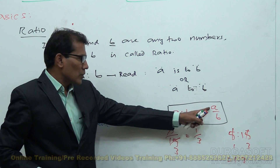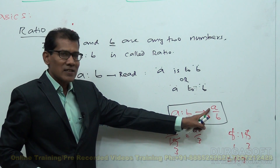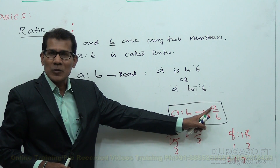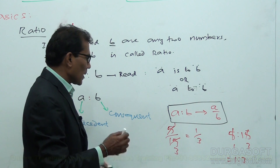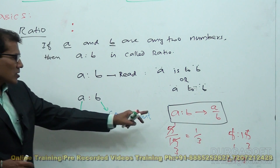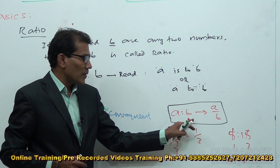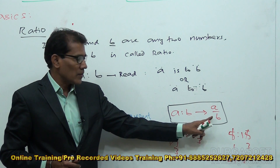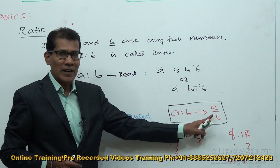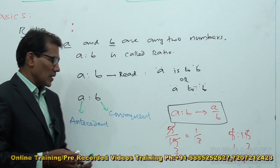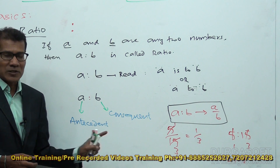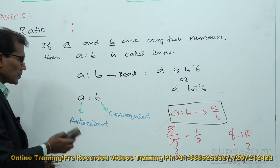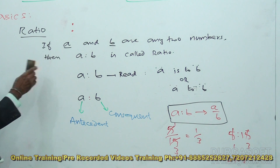When we write A by B, we do not call the parts antecedent and consequent. When we write A by B, A is called the numerator and B is called the denominator. The same thing A is to B — A is called antecedent, B is called consequent. But when expressed as a fraction A by B, we call them numerator and denominator. Be careful — when these terms are used, we must be very careful about which number is which.